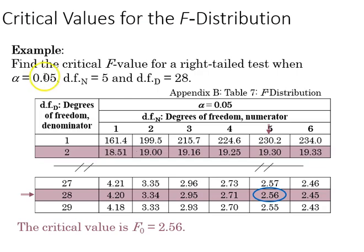At the 0.05 alpha level with five degrees of freedom in the numerator and 28 in the denominator, we can find our way to the critical value, which would be 2.56.